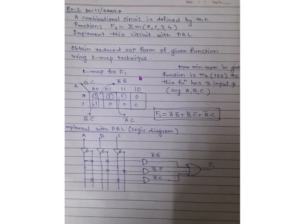Now we will take examples related to PAL — Programmable Array Logic. For PAL, only AND gates are programmable and OR gates are fixed. The next example was asked in December 2017 for 4 marks: a combinational circuit is defined by F1 = Σm(0, 1, 3, 4). Implement this circuit with PAL.